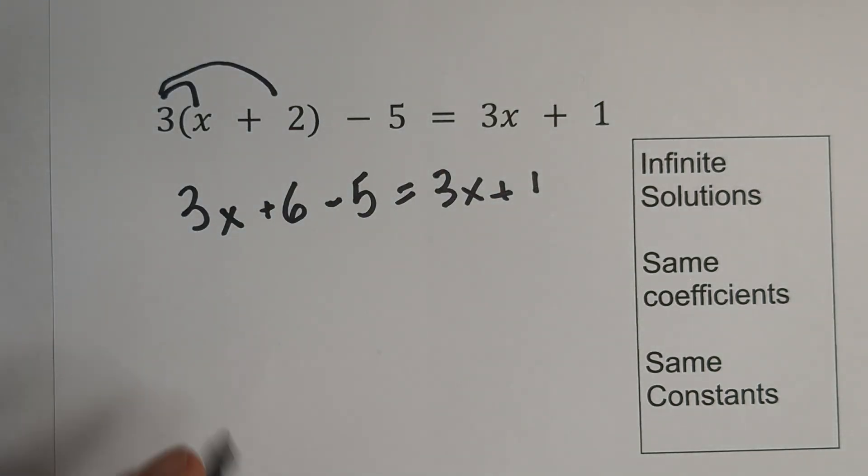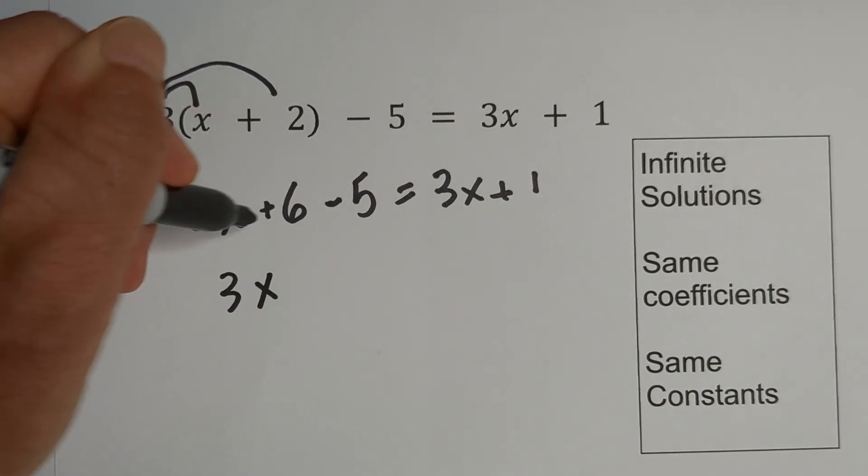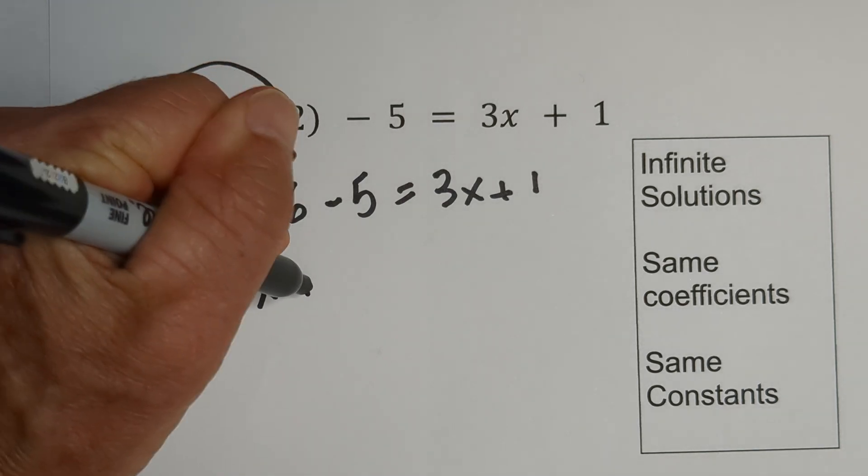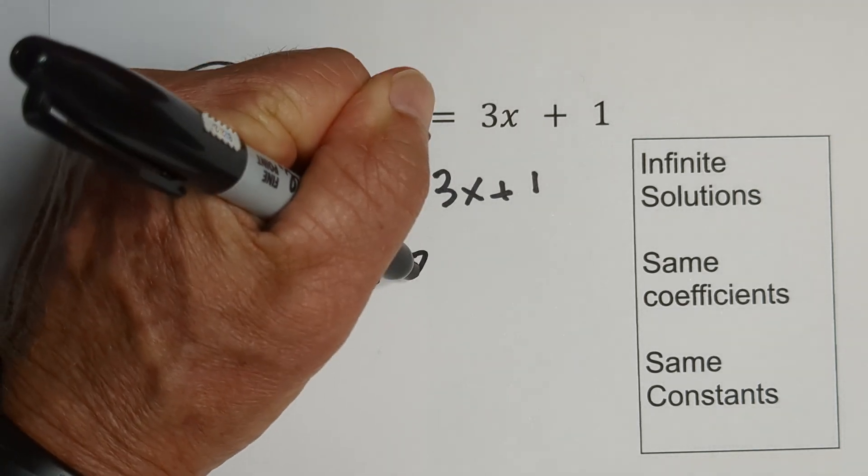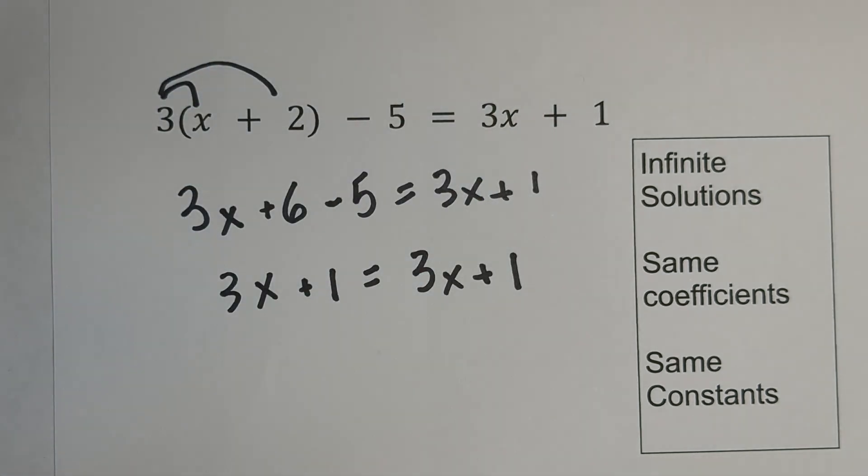Remember, the next step is we're going to combine like terms. We can combine the positive six and the negative five. So we have 3x, six minus five is a positive one, equals 3x plus one.